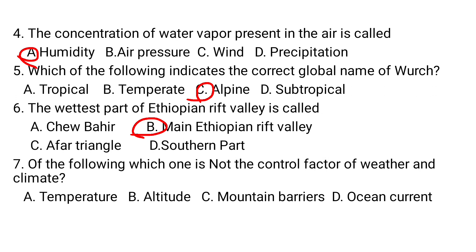Question number seven: of the following, which one is NOT a control factor of weather and climate? A) Temperature, B) altitude, C) mountain barriers, D) ocean currents. Temperature is not a control factor; rather, it is an element of weather and climate.